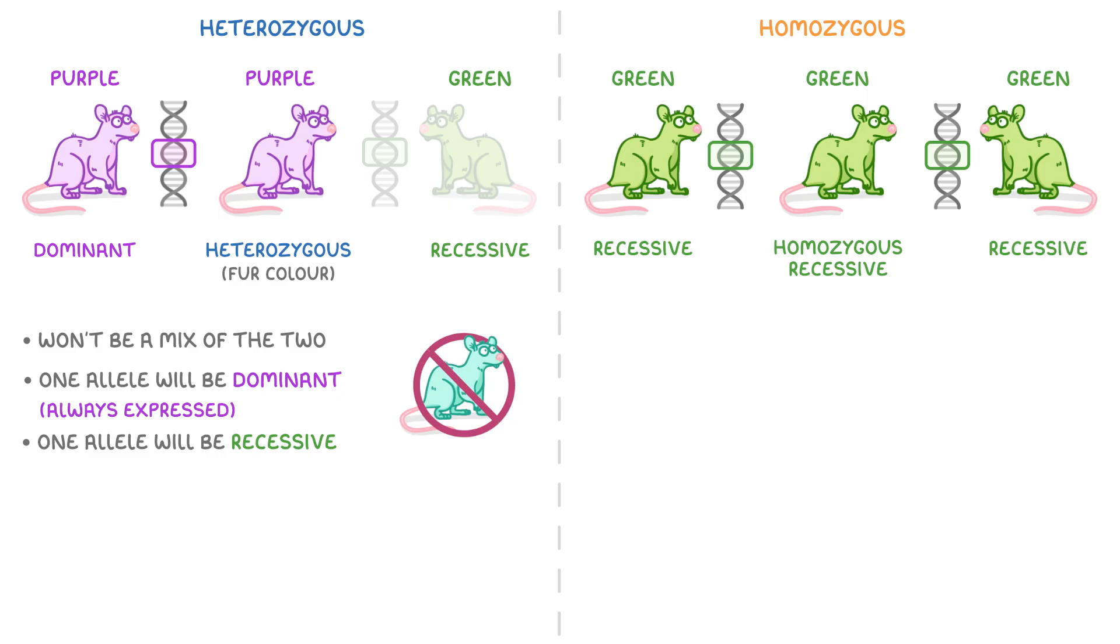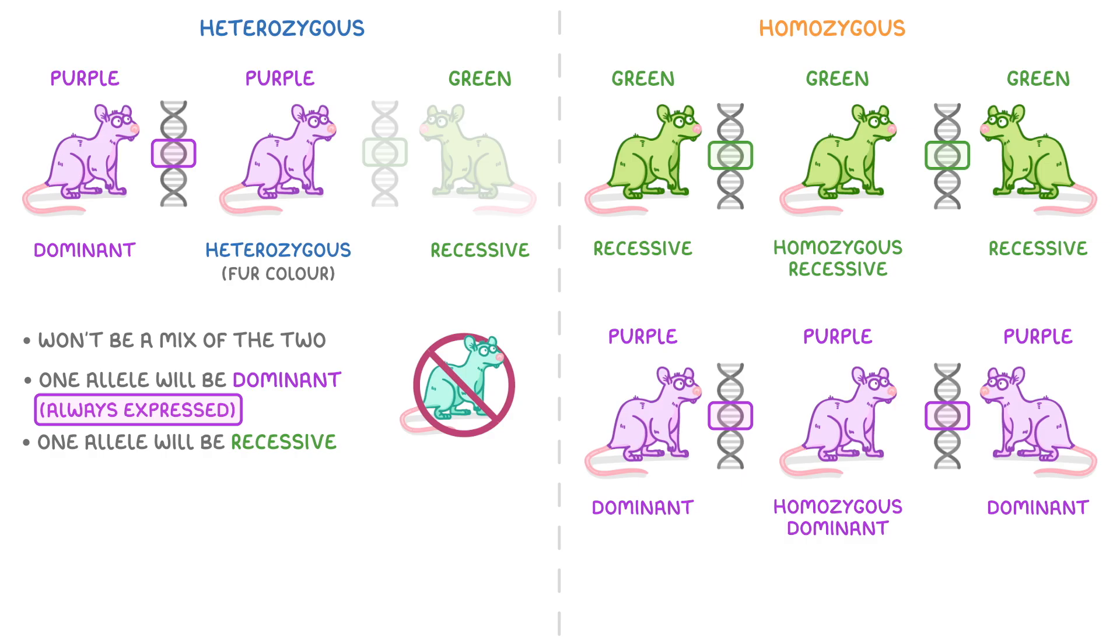On the other hand, the purple allele will always be expressed when it's present, regardless of whether the mouse is heterozygous or homozygous for the purple allele.